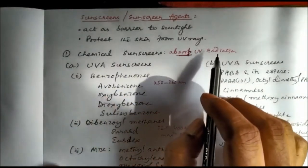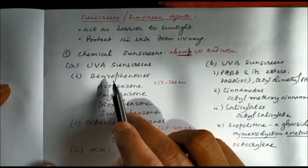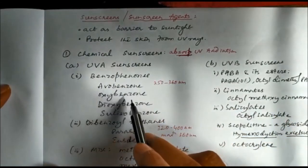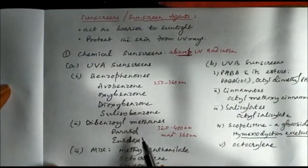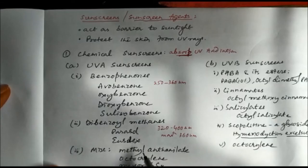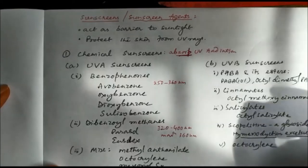Agents that absorb UVA radiation include benzophenones like avobenzone, oxybenzone, dioxybenzone, and sulisobenzone; dibenzoylmethanes like Parsol and Eusolex; and other agents like methyl anthranilate, octocrylene, and mexoryl SA.